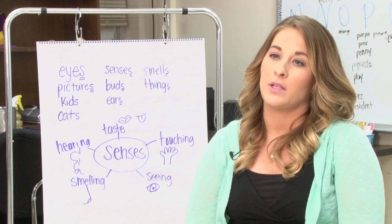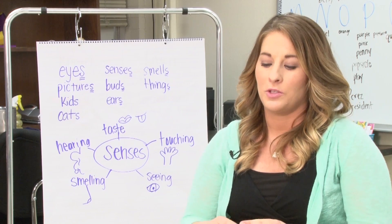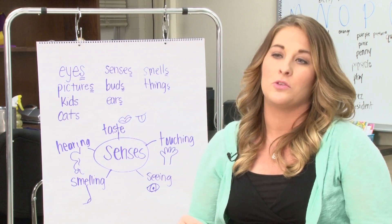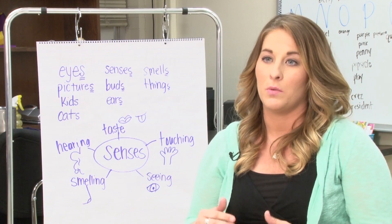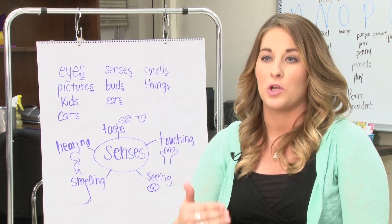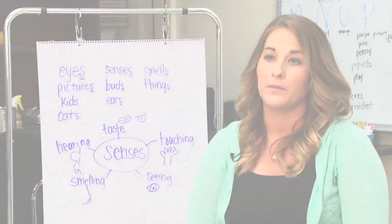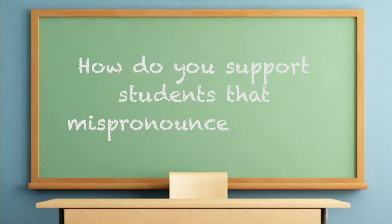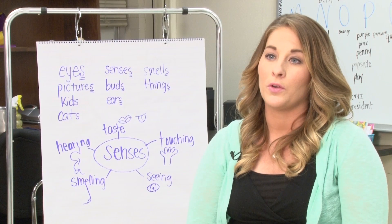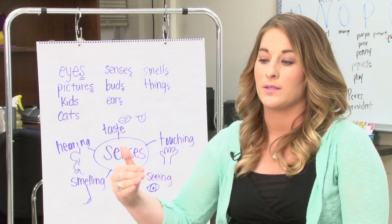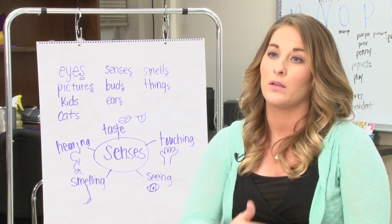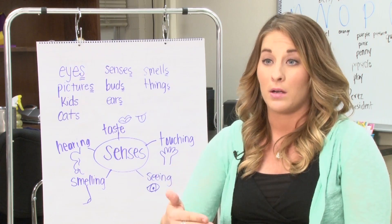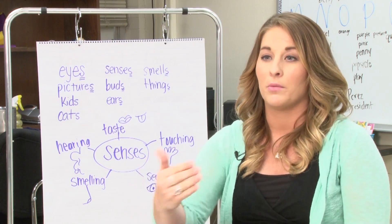During reading, you check for understanding because you don't want the student to do a word call — you want them to actually know what they're reading. When they mispronounce a word, you want to read the sentence back correctly by modeling and then have them read it back the way you modeled it.